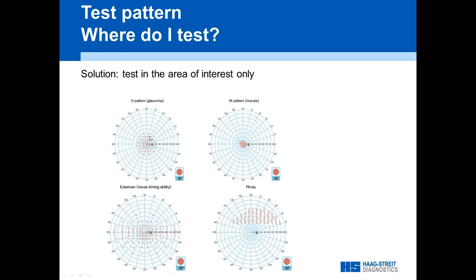For example, the G pattern for glaucoma focuses on the central 30 degrees because that's where you detect the disease. The M pattern for the macula focuses on the macula because macular diseases are naturally located there. The asthma and visual driving ability pattern looks like a car's windscreen field. For ptosis — a hanging lid — the lid hangs down from above, so that's where we test.